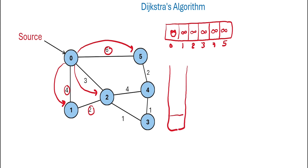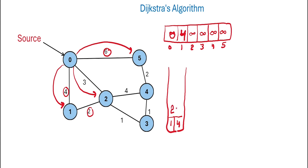From node 0, we can move to nodes 1, 2, and 5. The distance between 0 and 1 is 4, between 0 and 2 is 3, and between 0 and 5 is 6. Since the current distances of all these nodes in the distance array are infinity, which is more than these values, we insert all these nodes into a priority queue with their distances and update the distance array accordingly.